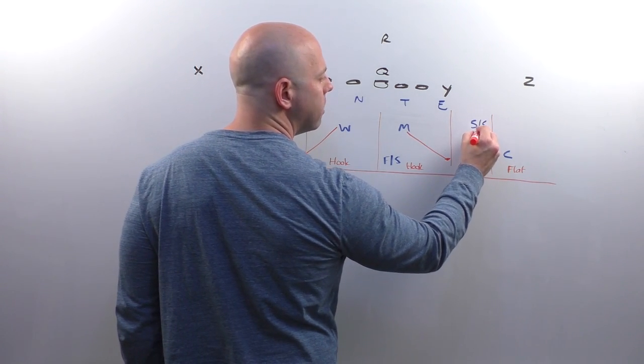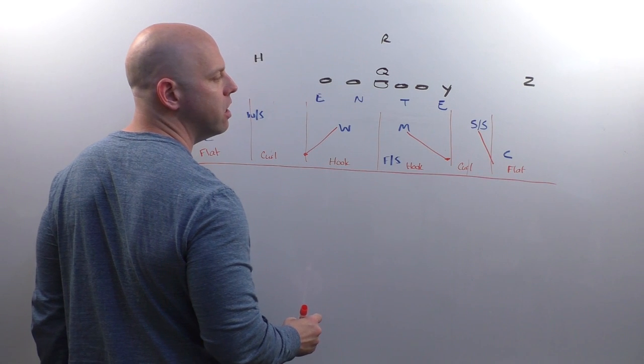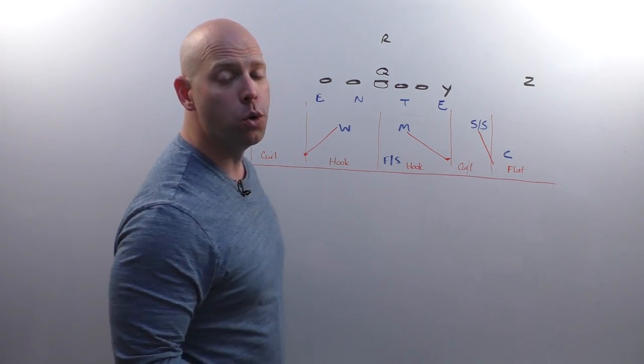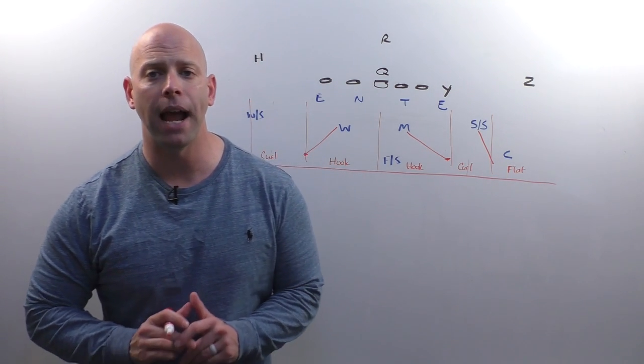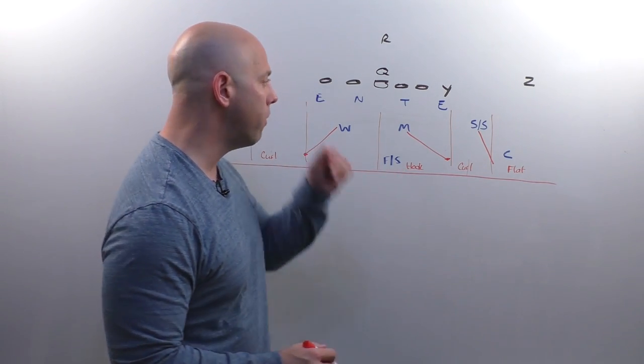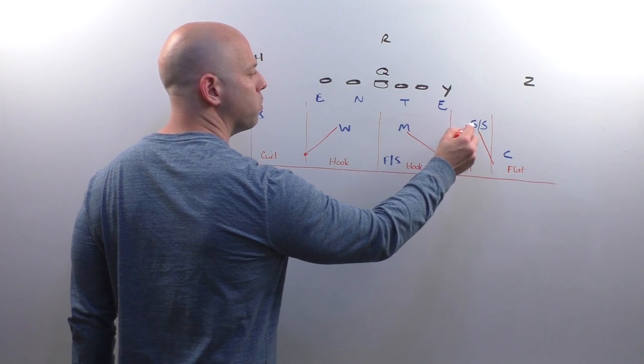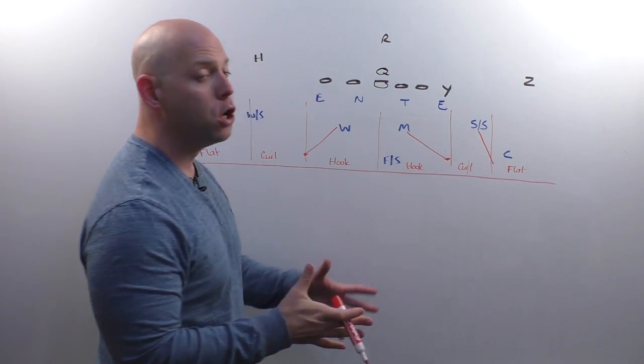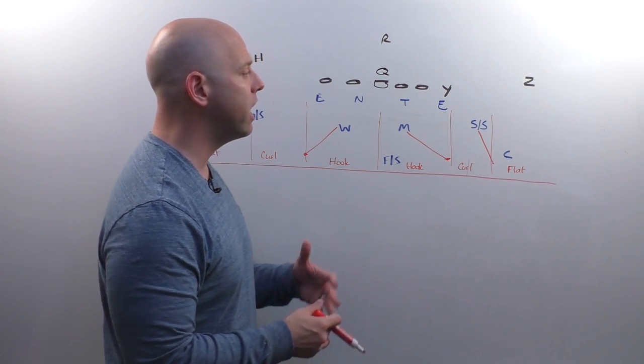We're going to drop our guys still to an area about halfway between hash and numbers with our safeties. And again, doing the same thing. Now for them, they're keying quarterback. So what they'll see is ball up from the quarterback. They're going to be taking off to, when they get the pass read, they're going to be taking off to an area 12 yards deep, halfway between hash and numbers.